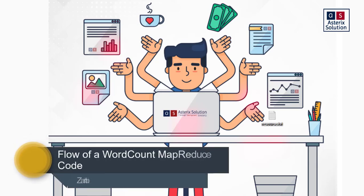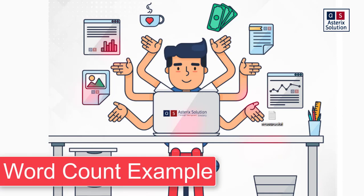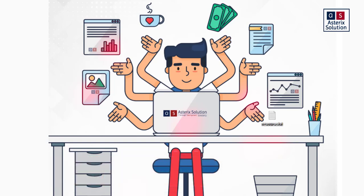Welcome back to the channel, Asterisk Solutions. Continuing our series on Hadoop Gyan, this video is about the flow of a MapReduce code and the basic hello world example. What we usually do in MapReduce is word count — word count is like the hello world program for Hadoop, the bare minimum thing you can do without falling into big problems. Let's begin with a full flowchart of how things are done.